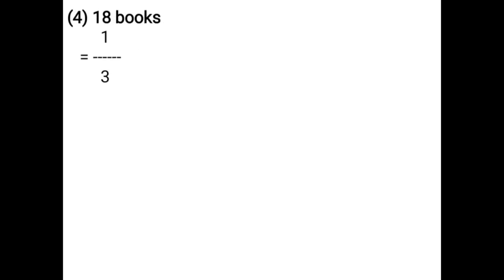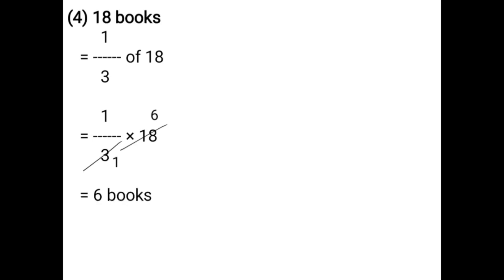18 books. That is equal to 1 upon 3 of 18, that is equal to 1 upon 3 into 18. Using the cancellation method: 3 ones are 3, 3 sixes are 18, 1 six is 6. That is equal to 6 books.